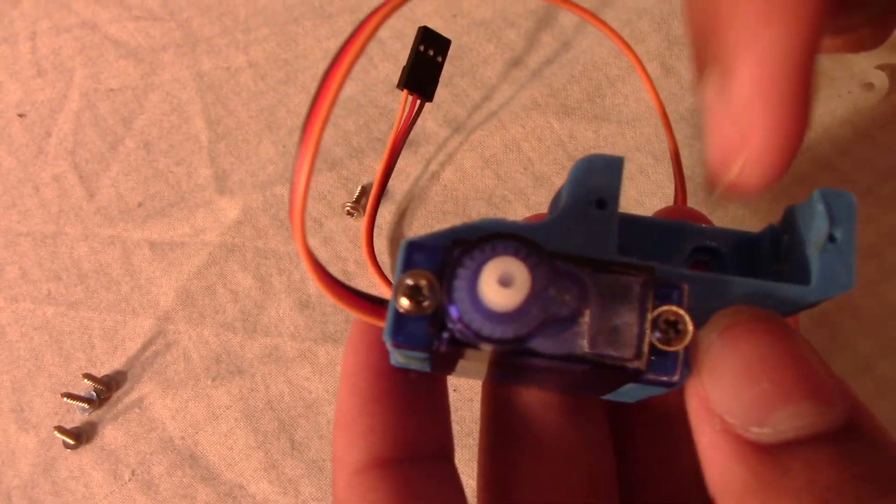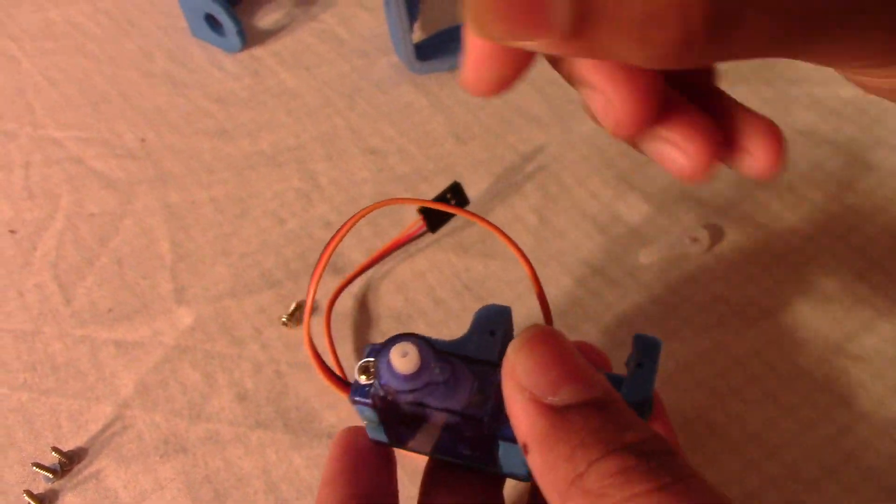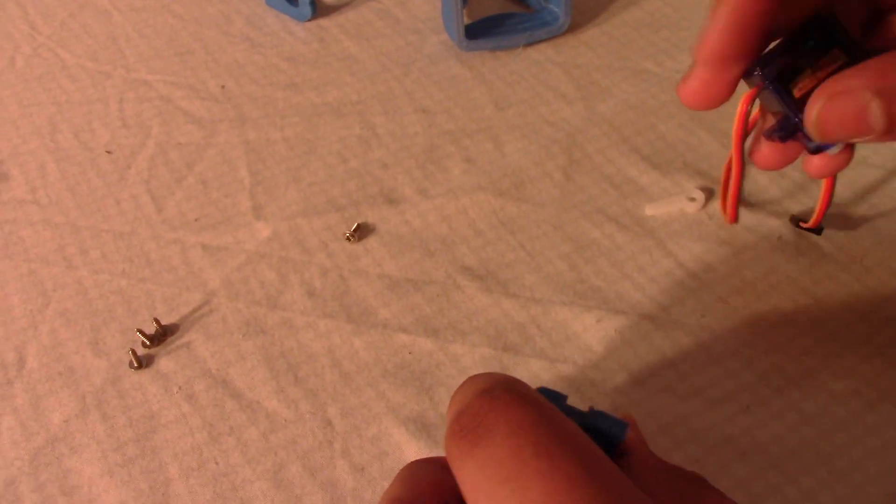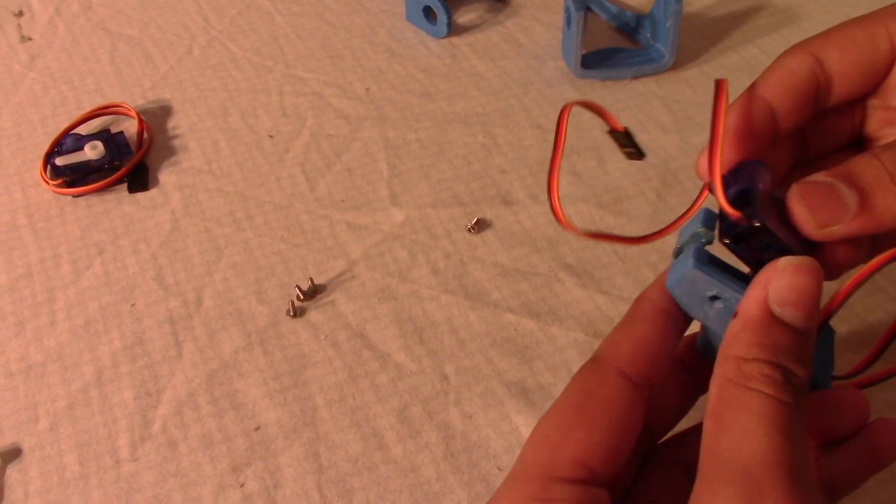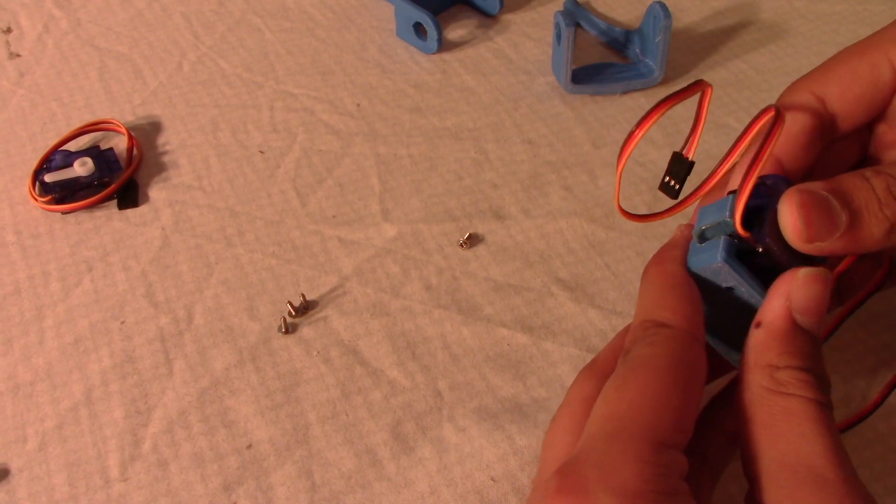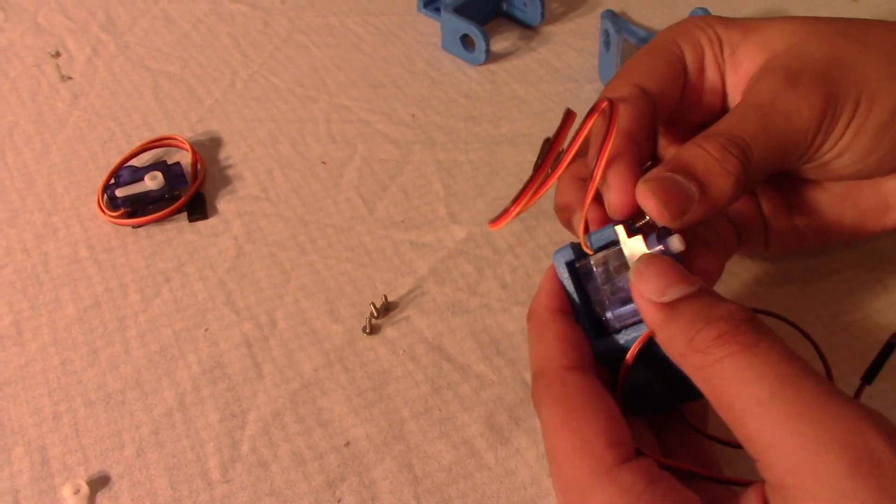After doing these two screws, you do the same thing on this side. We have our servo, put it in just like this so the sticker is facing the inside, goes through, and I just screw it on.